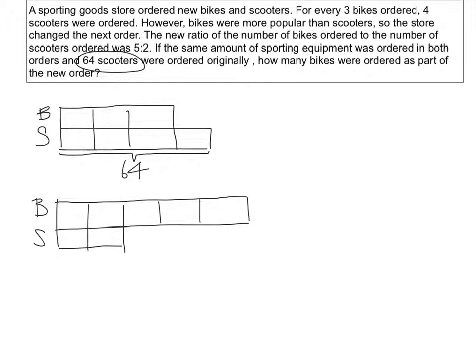So from here we can see that 64 represents these 4 boxes of scooters. So to find 1 unit, we will take 64 divided by 4. That should give us 16. So each of these 1 unit is 16 scooters.